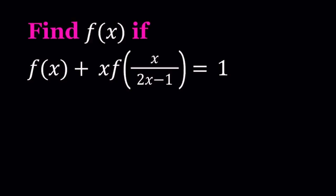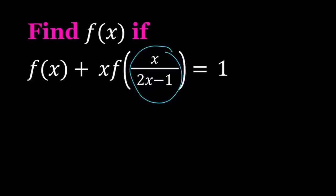Now, we would like to find f of x, so let's see if we can get something like that from here. First of all, I'm going to show you the next steps and why I'm taking those steps, so I'm going to do a little bit of explaining. Let's go ahead and replace x over 2x minus 1 with another variable — how about t?